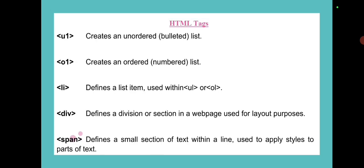ul creates an unordered list and ol creates an ordered list. An unordered list appears in the form of bullets, while an ordered list appears in the form of numbering. The li tag is used to define a list item, and you have to use the li tag within ordered or unordered lists.